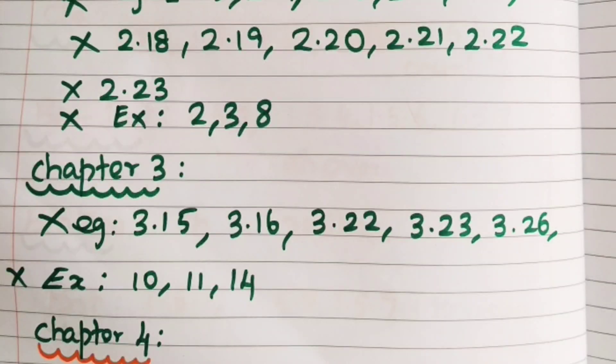Let's go to Chapter 3. In Chapter 3, there are 3.15, 3.16, 3.22, 3.23, 3.26.